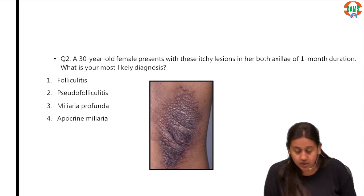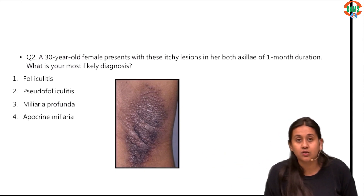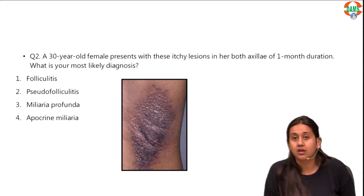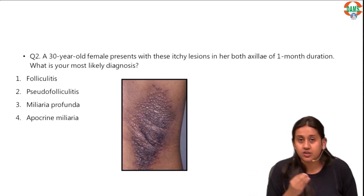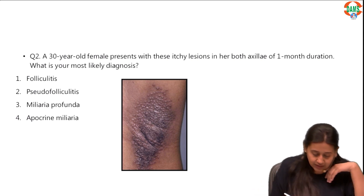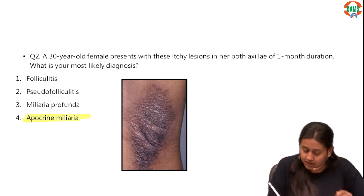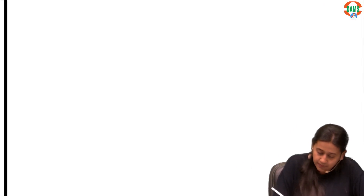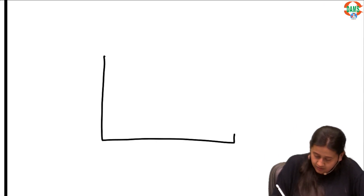The next question: a 30-year-old female presented with itchy lesions in both her axilla since one month. What is the most likely diagnosis? This is a very classical example of apocrine miliaria.